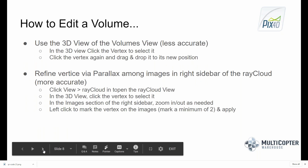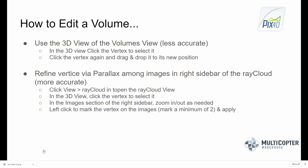Once you've created a base, you have two ways to edit it. First, you can use the 3D view — click and drag vertices to a new location, though you need to snap to existing dense point cloud points. The more accurate method is to refine vertices via parallax among images in the right sidebar of the ray cloud. Click on a vertex to select it, then go into the ray cloud properties window and update your image selection to refine that point.